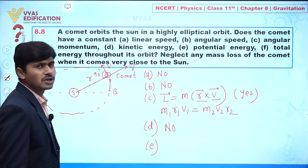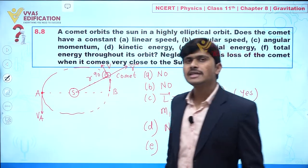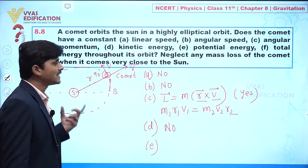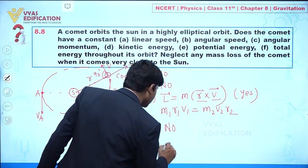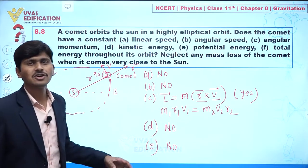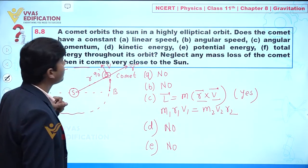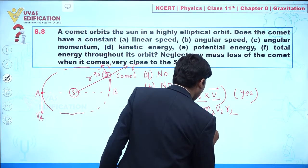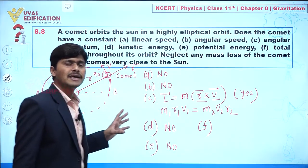Part (e): Potential energy. The position of the comet with respect to the sun is changing with time, so potential energy is also changing. Potential energy does not remain constant.